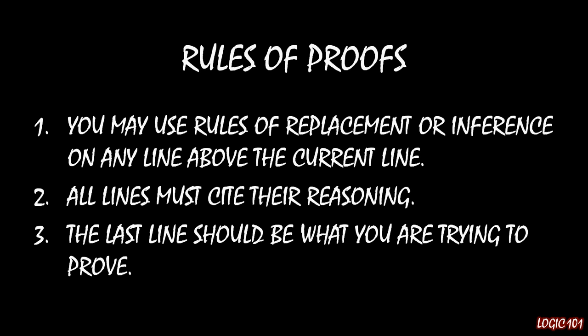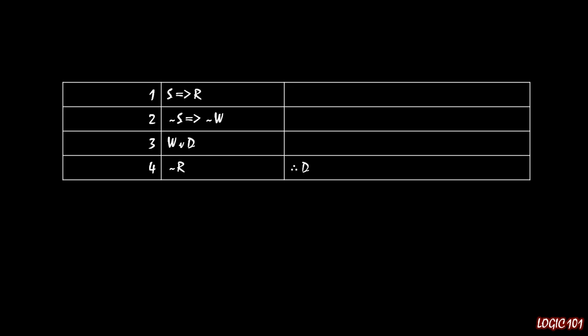Lastly, the final line in a proof should be whatever it is that you're trying to prove. So if we go back to what we were looking at before, we see that we have 'therefore D' there, which means the last line of our proof should say D is true, because if we have D is true, then the purpose of the proof is complete.